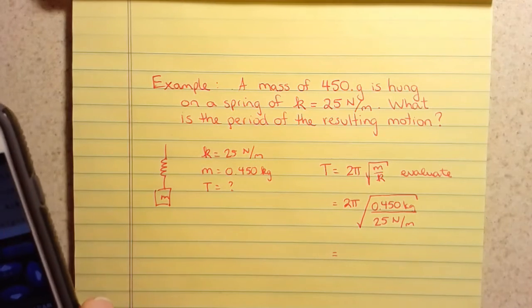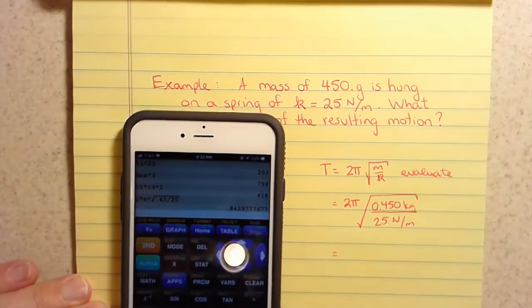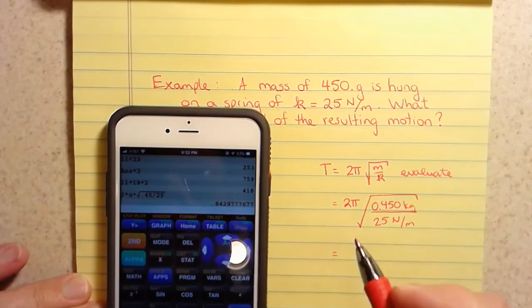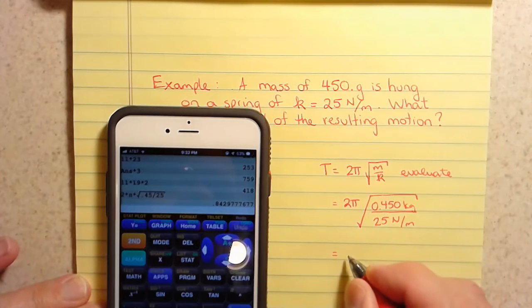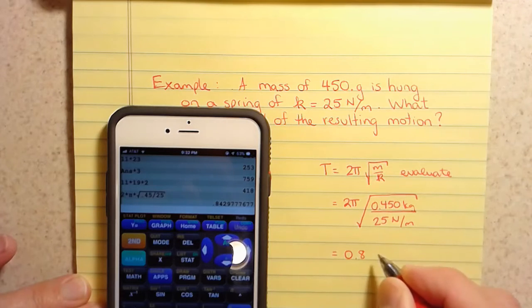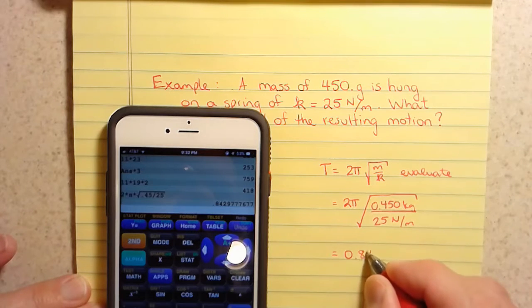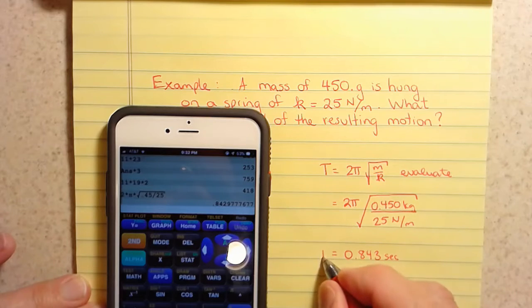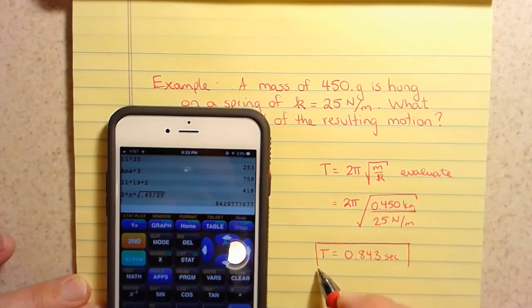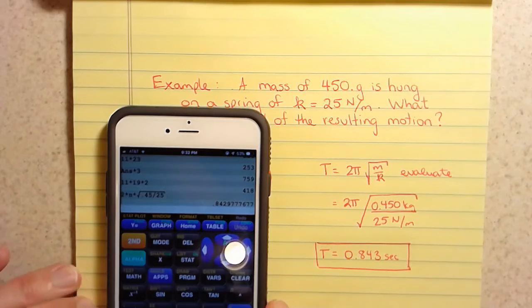And after you're doing your computation, you get a result which looks about like this. I took 2 pi times the square root of 0.45 over 25, and I get 0.843, and that is seconds. So it takes a little less than a second for this mass to bob up and down and complete a cycle.